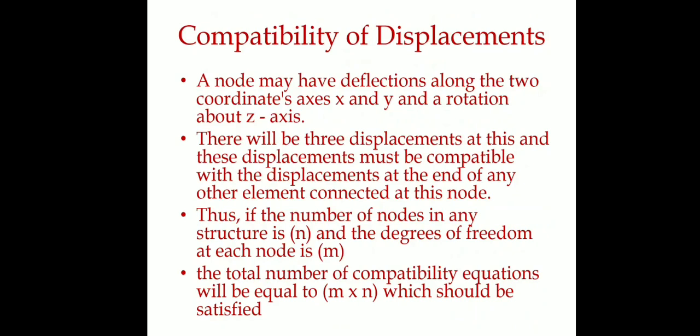Compatibility of displacement: normally in an xy axis there are 3 motions — displacement in x-direction (translation), displacement in y-direction (translation), and rotation. These 3 motions represent the possibilities for compatibility. If the number of nodes is n and the number of degrees of freedom per node is m, then the total number of compatibility equations equals m multiplied by n.